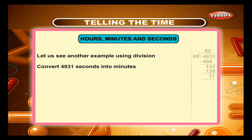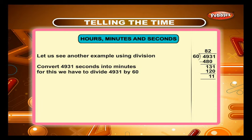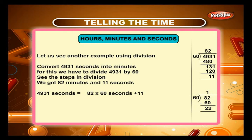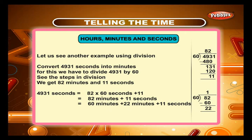Let us see another example using division. Convert 4931 seconds into minutes. For this we divide 4931 by 60. We get 82 minutes and 11 seconds. So 4931 seconds equals 82 times 60 seconds plus 11 seconds, which equals 60 minutes plus 22 minutes plus 11 seconds, which equals 1 hour 22 minutes and 11 seconds.